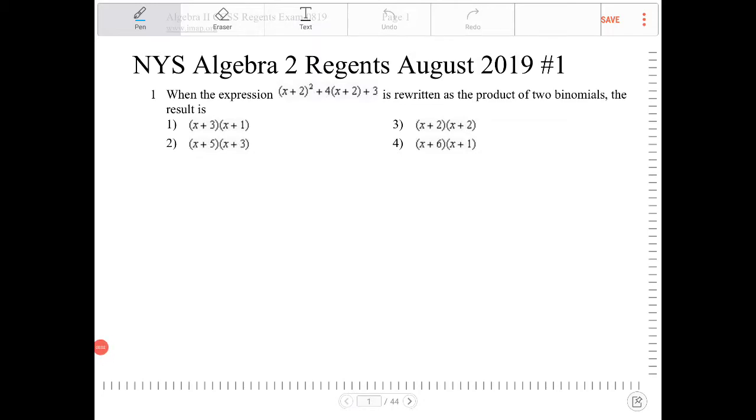When the expression (x+2)² + 4(x+2) + 3 is rewritten as the product of two binomials, the result is...